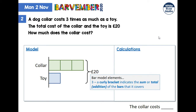That's the curly bracket we saw in the previous question, which tells us we are summing, totaling, adding the bars it covers. This is line two of the story: the total cost of the collar and the toy is £20. So we've put in that curly bracket and labeled the value of 20 to go with it.